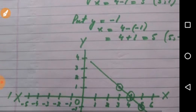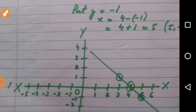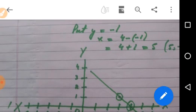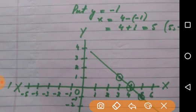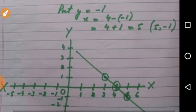Similarly the third value will be negative. In place of y put minus 1, so 4 minus into minus 1, minus minus is plus, so you will get 5. The ordered pair will be 5 comma minus 1.